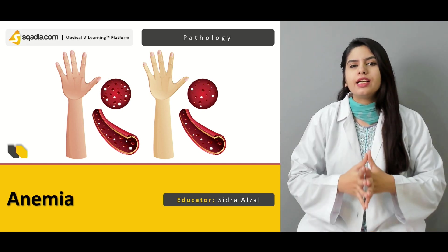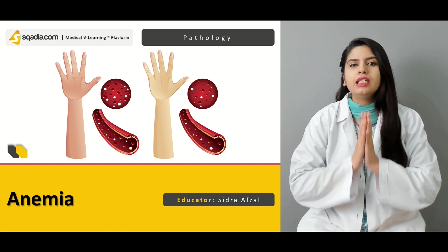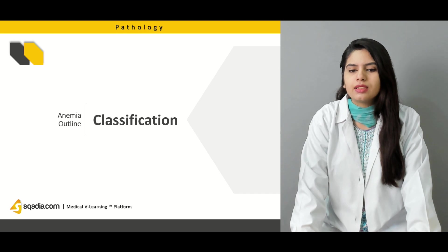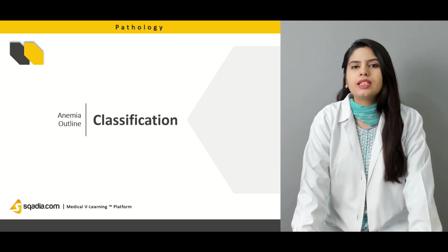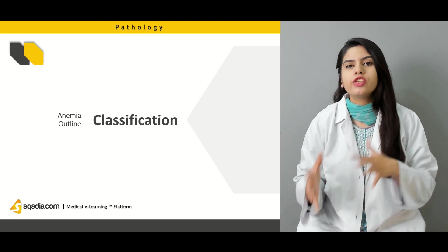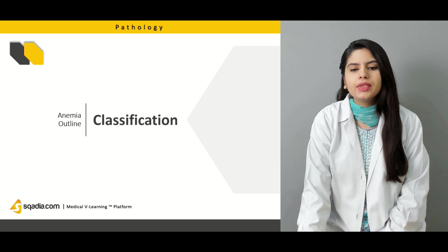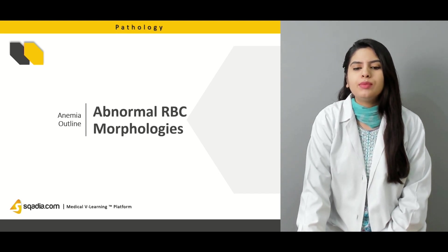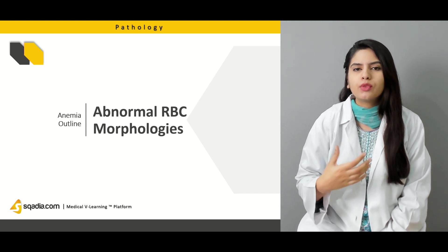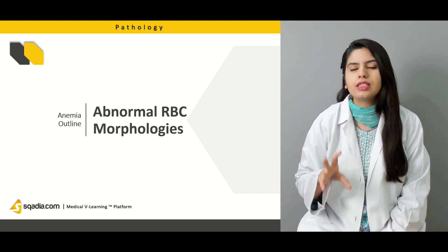In our today's lecture, we are going to study about the cause of anemia, its pathogenesis, but mainly we will focus upon the pathology of anemia and the appearance of the red blood cells. First, we will start with the classification of anemia — how it is classified morphologically and pathologically. We will discuss both classifications in detail. Then we will discuss about the abnormal RBC morphology — whenever there is any pathological condition, how it alters the shape of the red blood cells, how they appear, and how you can distinguish them or diagnose the condition histologically.